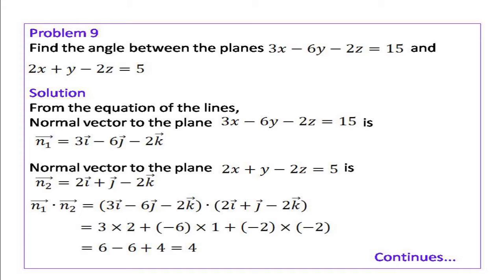Consider the problem: Find the angle between the planes 3x minus 6y minus 2z equal to 15 and 2x plus y minus 2z equal to 5. The normal vector to the first plane is vector n1 equal to 3i minus 6j minus 2k. Also, the normal vector to the second plane is vector n2 equal to 2i plus j minus 2k.